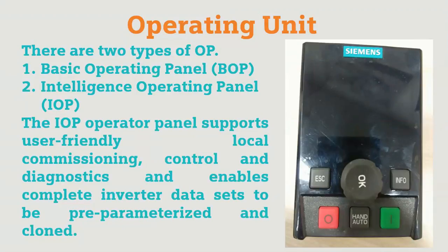There are basically two types of operating unit: the basic operating panel and the intelligence operating panel. This picture shows the intelligence operating panel. The IOP supports user-friendly local commissioning — in a very short time you can commission, control, or diagnose the complete inverter data set, and save the data in the drive. Different buttons allow you to insert parameterization data and save it to memory. For the Siemens series, you can save data onto a memory card and then use it in another drive.